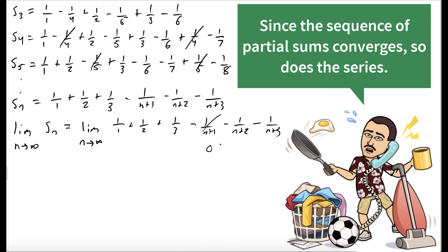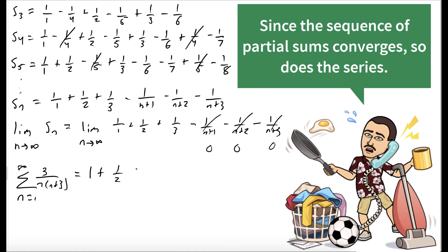Those last three terms all go to 0 as n goes to infinity. So our sum — the sum from n equals 1 to infinity of 3 over n times n plus 3 — is equal to 1 plus 1 half plus 1 third, which is 11 sixths.